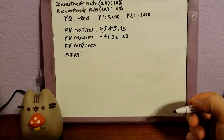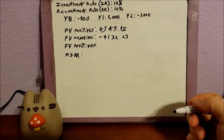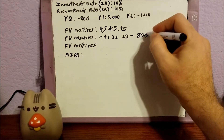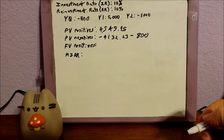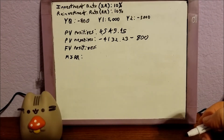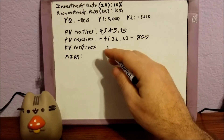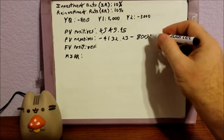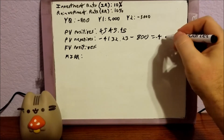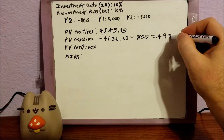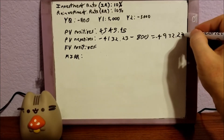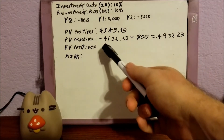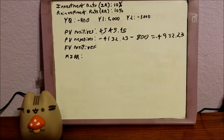Now, if you're thinking that's not all the negatives because year zero is also a negative — you're correct. So we have to subtract 800 from this. It seems like an unnecessary extra step, but the calculator just can't handle it otherwise. So negative 4,132.23 minus 800 gives us negative 4,932.23.